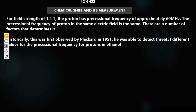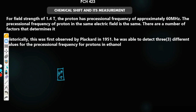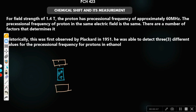In this lecture we are going to talk about chemical shifts and their measurement. The general idea behind NMR is that we have a sample containing nuclei — in this case, protons. These nuclei can orient in different directions, and in the presence of an external magnetic field, they have the ability to precess.